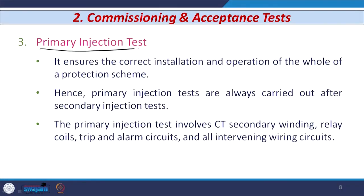The third test is known as the primary injection test. This test is performed to ensure the correct installation and operation of the whole protective system or scheme. Primary injection tests are always carried out after the secondary injection test. The primary injection test involves the secondary of the CT, the coil of the relay, the trip and alarm circuit, and all the intervening wiring. This test is usually carried out with a portable injection transformer using local main supply that has several low-voltage, high-current windings.